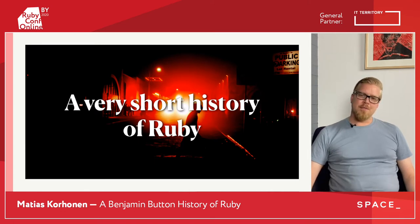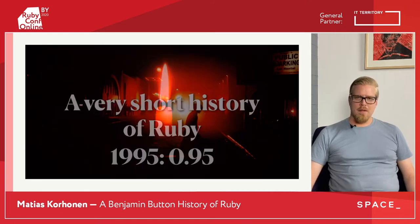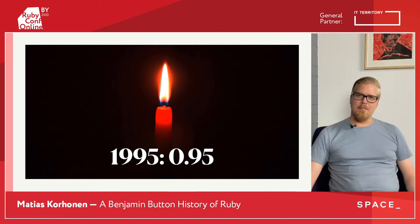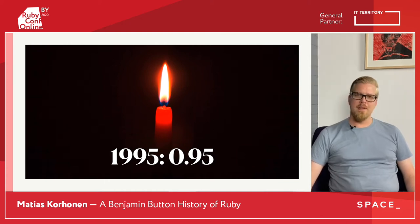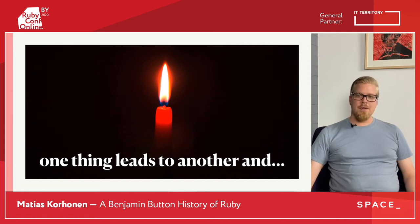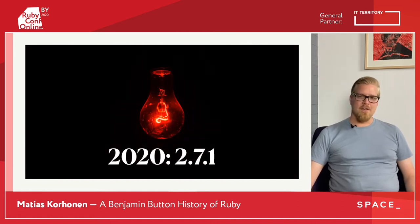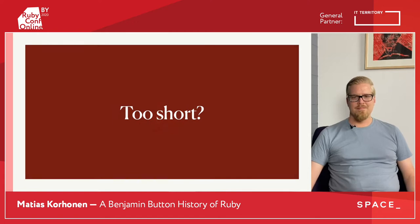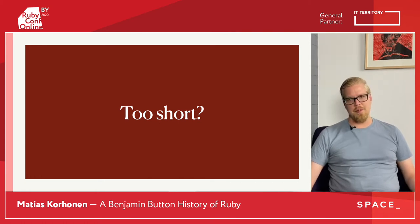Let's begin with a short history of Ruby. So in 1995, Mattz publishes version 0.95 of Ruby, and this is the first version ever published of Ruby. One thing leads to another, and in 2020, version 2.7.1 is released. That might've been a little bit too short, but let's work backwards from 2.7.1 and see how far we can get.